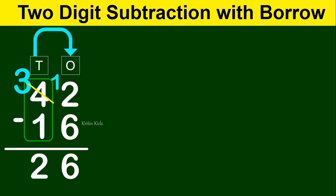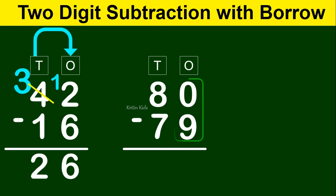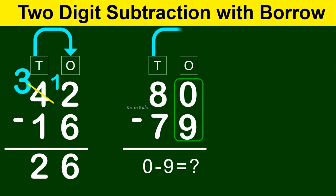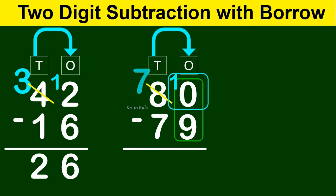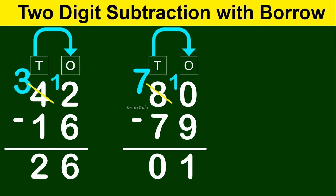Let's take one more example: 80 minus 79. On the ones position we have 0 and 9. We cannot subtract 9 from 0, so we will have to borrow from the tens position. We take 1 from 8, so this number becomes 10, and 8 becomes 7. 10 minus 9 gives us 1. At the tens position, 7 minus 7 gives us 0. So 80 minus 79 gives us 1.